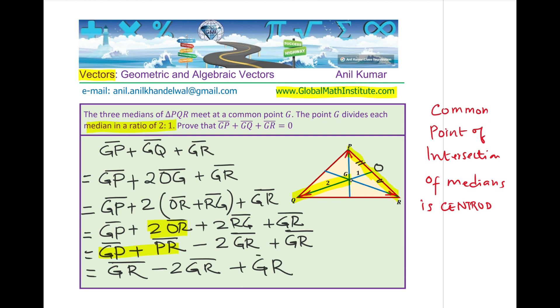And we already have here minus 2GR plus GR. Now, what is that equal to? GR and GR is 2GR. So I could write this as 2GR minus 2GR. And that is indeed equal to 0. And that is what we wanted to prove.